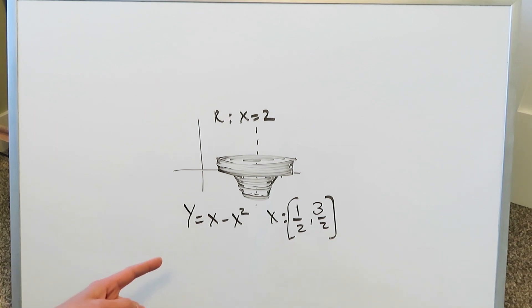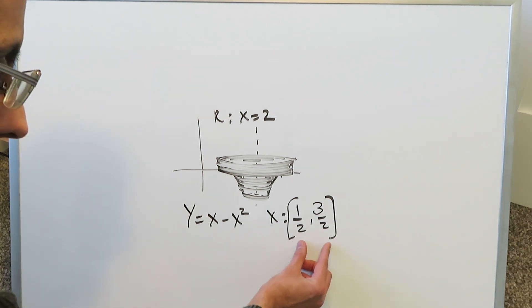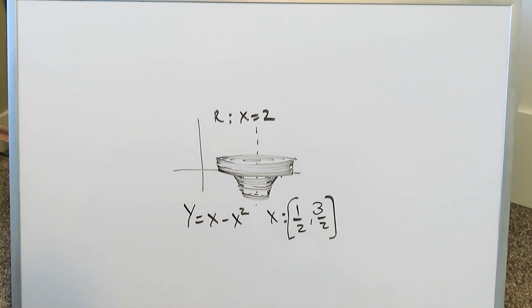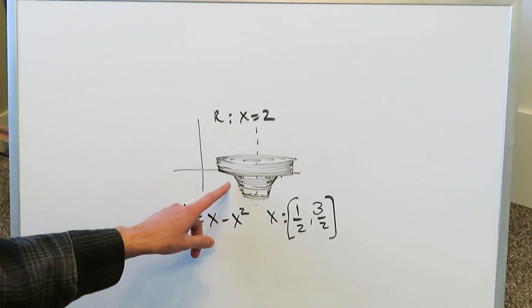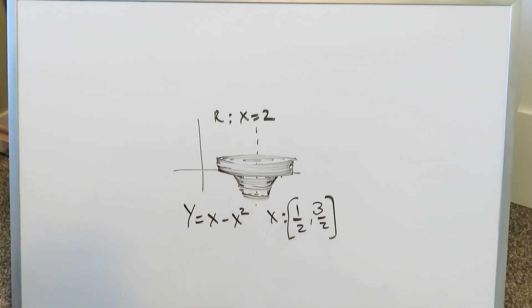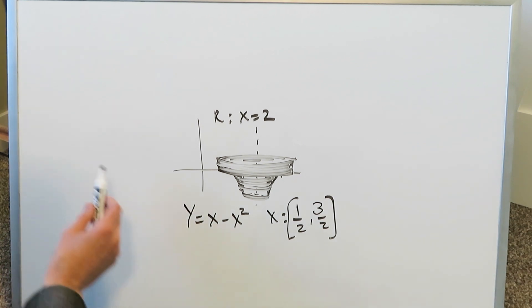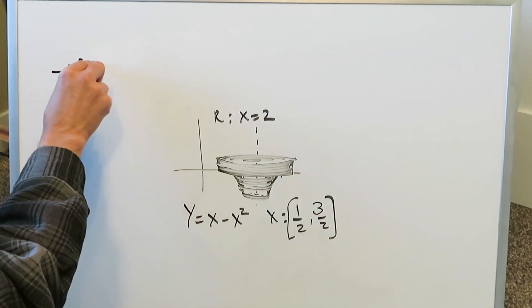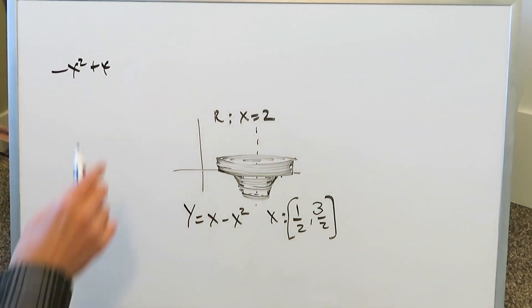When you take this curve on the interval 1/2 to 3/2 and rotate it around the axis, a solid forms. I am already showing you the three-dimensional solid that forms. What we need to do is examine this in terms of its anatomy. We're looking at negative x squared plus x.